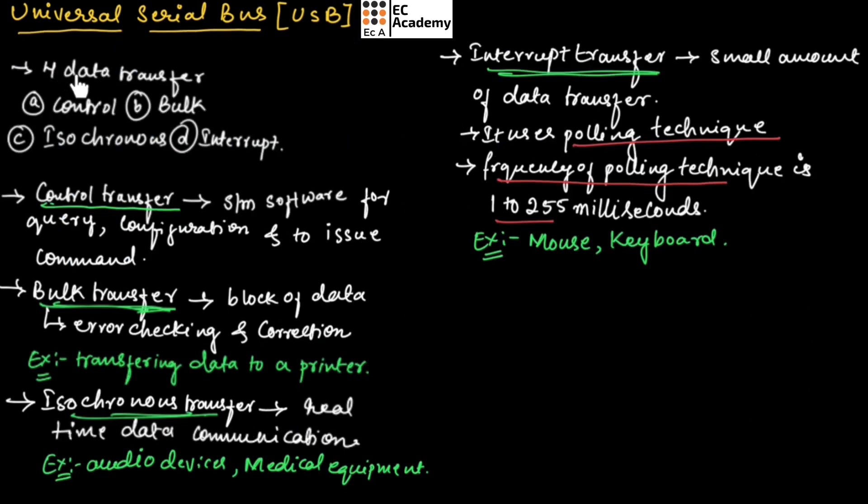In USB, there are four types of data transfer: control, bulk, isochronous, and interrupt data transfer. The control transfer is used by USB system software for query configuration and to issue commands, so control transfer is used for controlling the data transfer in the USB.